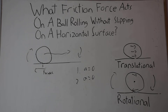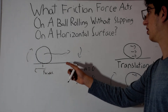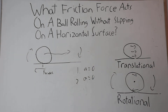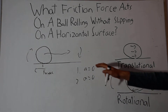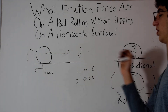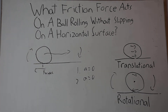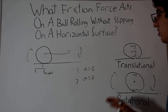So its angular acceleration is also zero. Well, what am I getting at? If friction is the only force on the ball in the horizontal direction — because gravity and normal force act on the ball but are canceled out — and the acceleration is zero and the angular acceleration is zero, then the force of friction must be equal to zero.